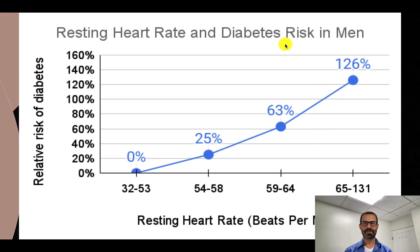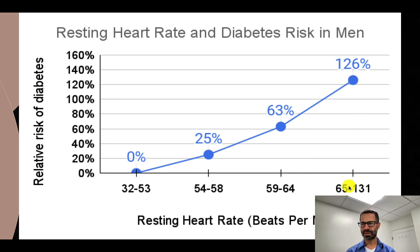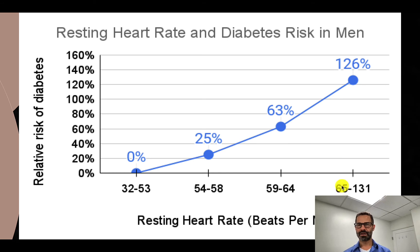Here are the results. This is the graph for men. The x-axis is resting heart rate in beats per minute, and the y-axis is the relative risk of diabetes during the follow-up period. This is really shocking because 65 beats per minute is the average resting heart rate in adults in the U.S.